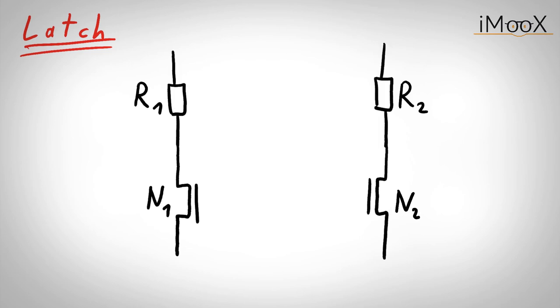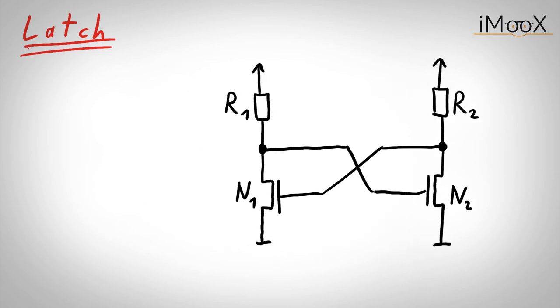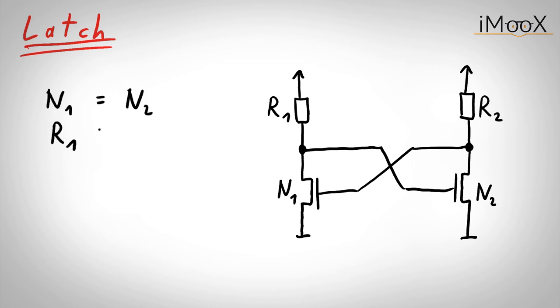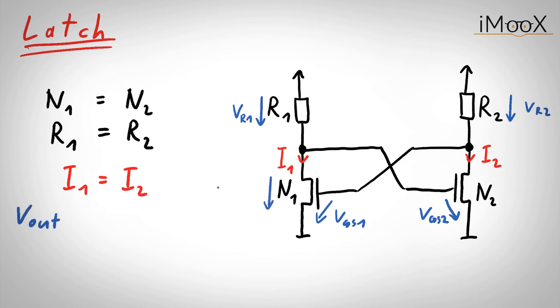A simple latch can be built with two transistors and two resistors, whereas the transistors are cross-coupled. Now, let us first assume that the transistors and the resistors are the same, so both branches are exactly equal. This also leads to the voltages and currents in the branches being equal. The outputs are denoted as Vout1 and Vout2.